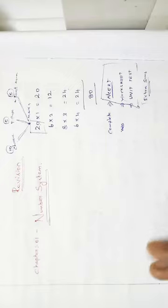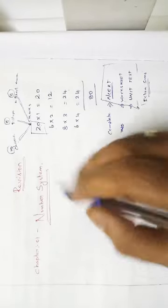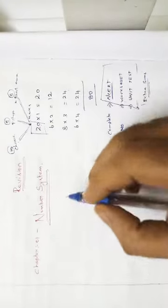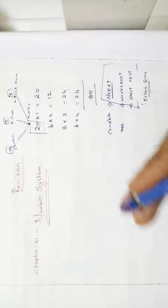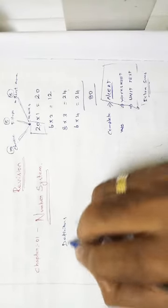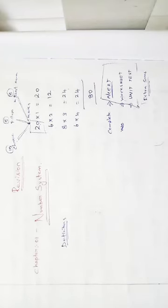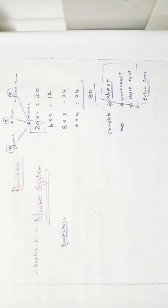In chapter 1 we have six exercises. Before entering into the concepts, you have to revise all definitions first: what is a natural number, what is a whole number, what is an integer, what is a rational number, what is an irrational number.